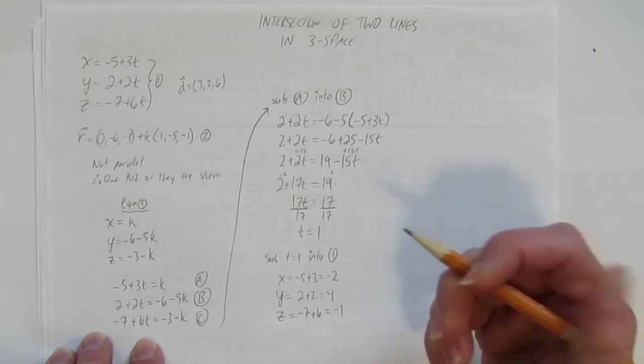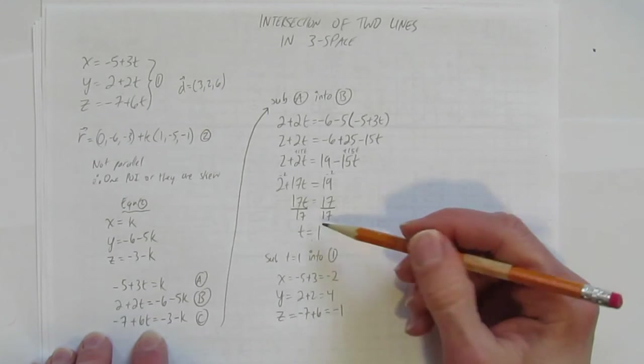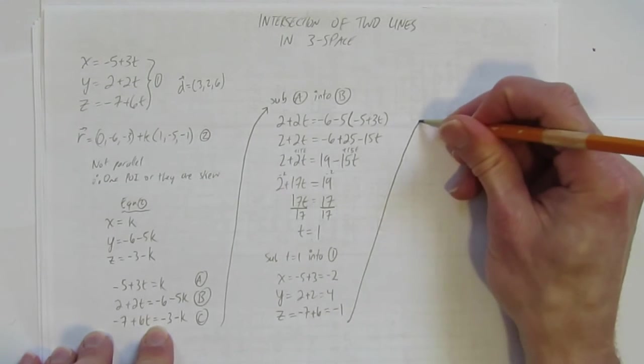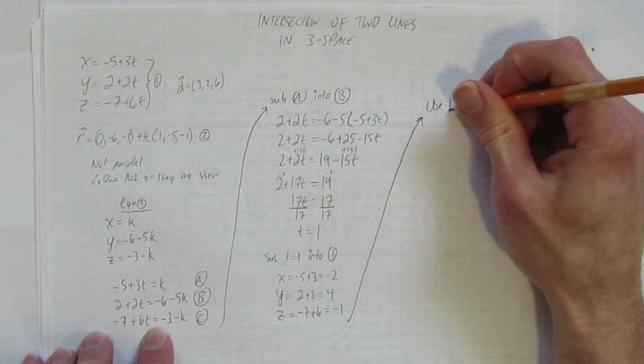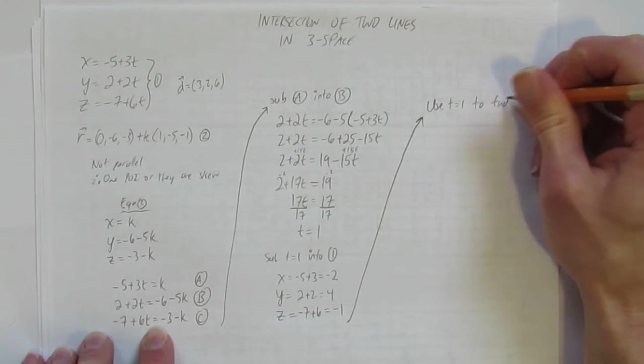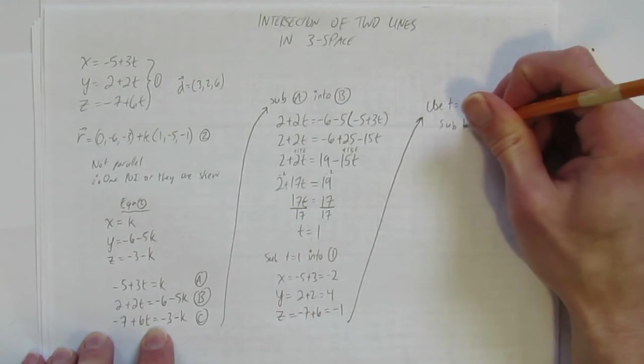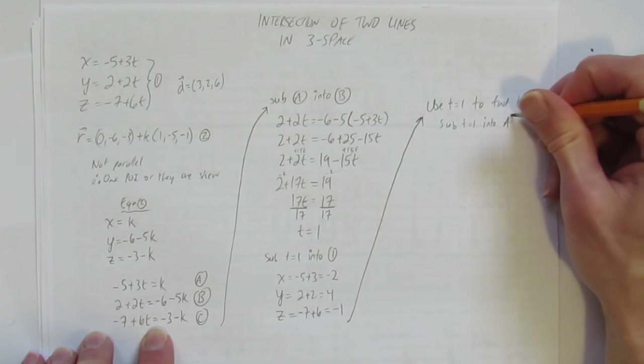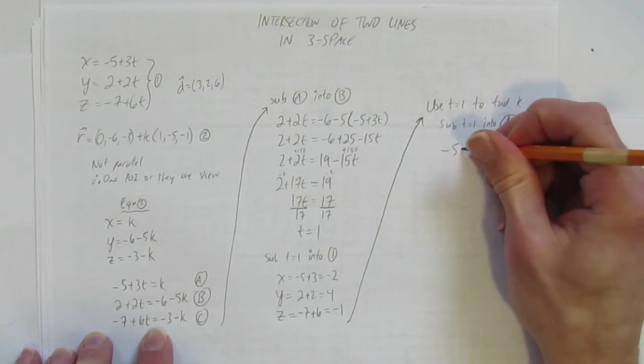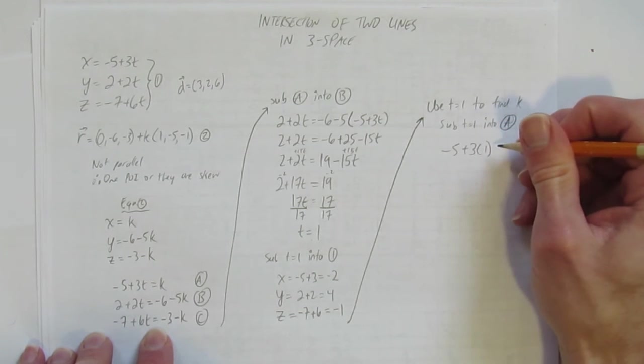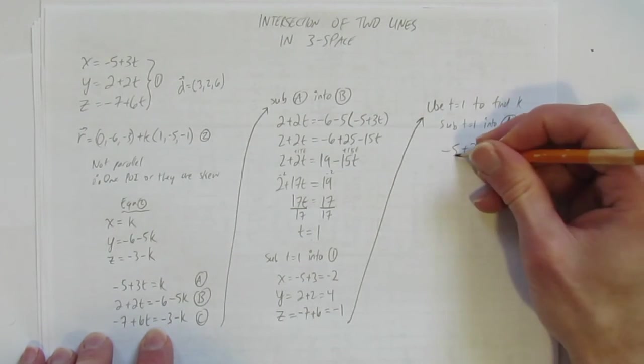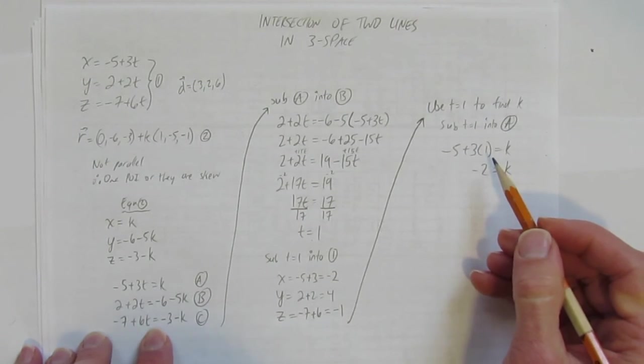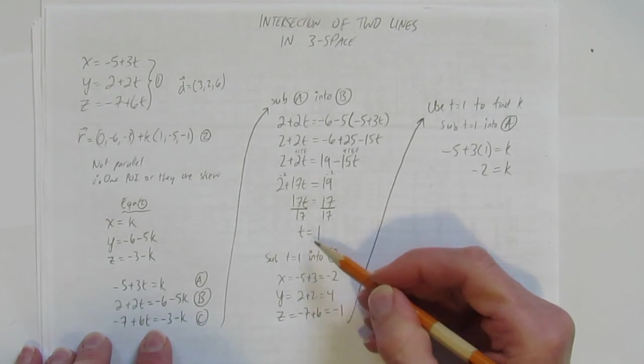But that's just finding t. There are other ways to confirm that we're right. But I like to check it by checking the k value. So what I'm going to do is find k. So from here, let's see, use t equals 1 to find k. And by that, I'm going to sub t equals 1 into, could be any equation, but obviously the A equation is easier. I'm going to sub t equals 1 into A. I get negative 5 plus 3 times t equals k. And that's negative 5 plus 3, which just gives you negative 2. Okay, so I have a solution here, which is negative 2 for k and t of 1.